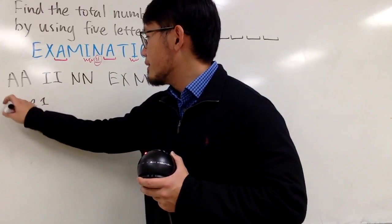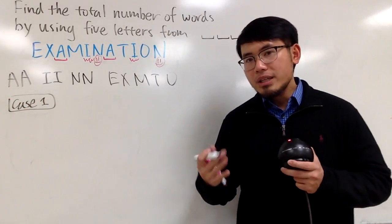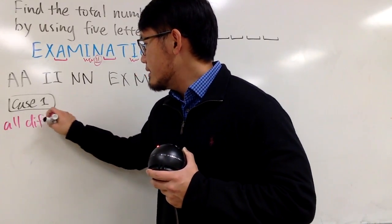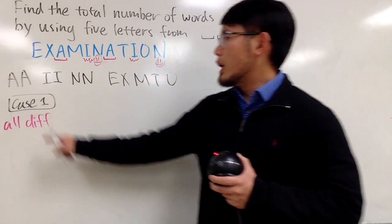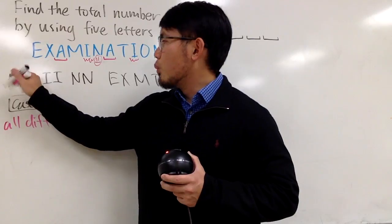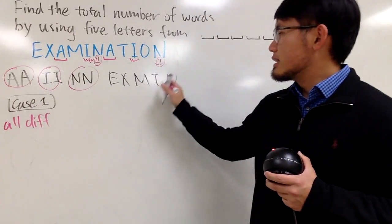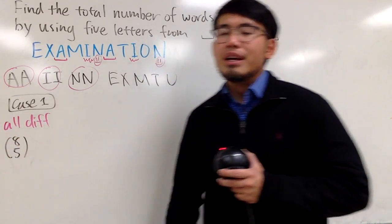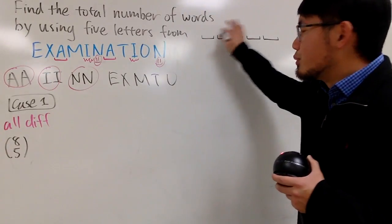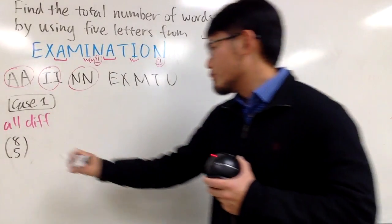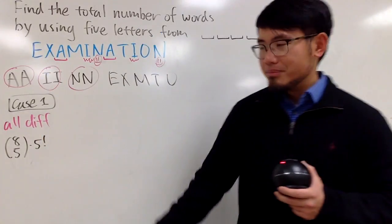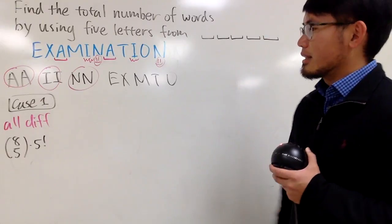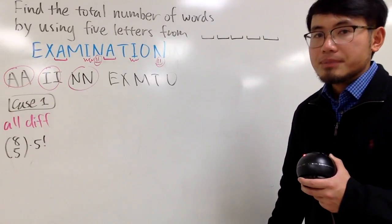Case 1. Suppose all the letters that you pick from here, they are all different. In this case, you have to consider this as just 8 different letters. And all we have to do is 8 choose 5. And after you have whatever 5 letters that you have, you are going to put them here and arrange them. So you have to multiply by 5 factorial. Because this right here tells you the number of ways to arrange 5 things out of just 5 things on a line like this. So that's case 1, which is the easy case.